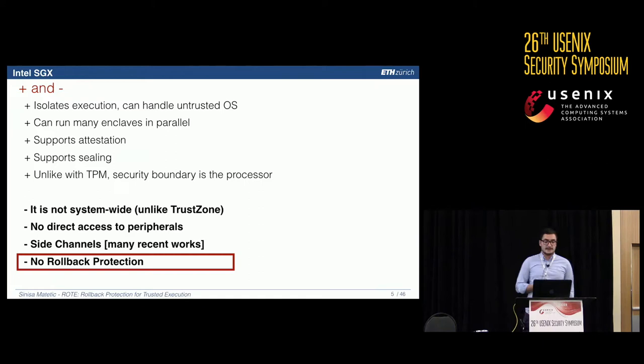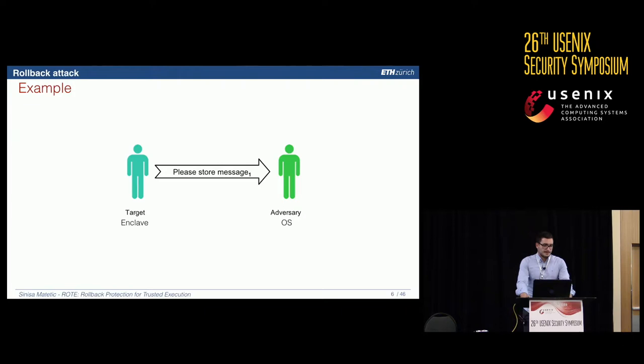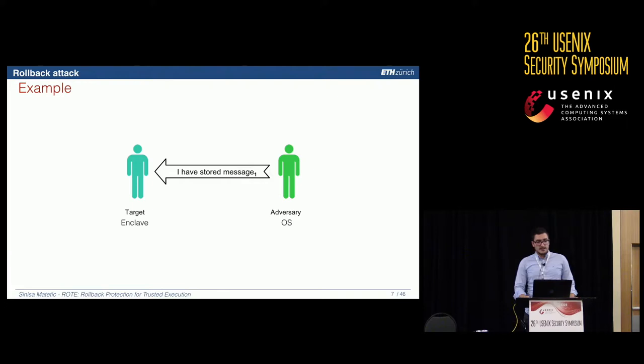The key limitation — and the topic of this presentation — is that SGX doesn't protect against a rollback attack. For example: on one machine, an enclave asks the OS to store message one. The OS stores it. After computation, the enclave updates its state and asks the OS to store message two. The OS stores message two.